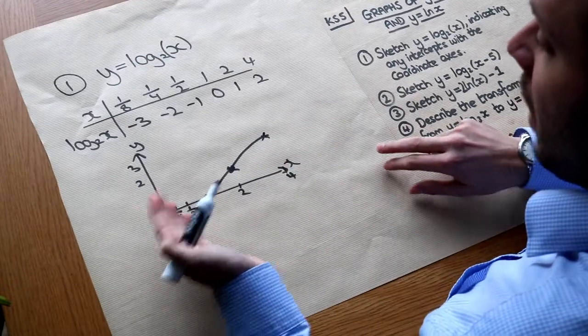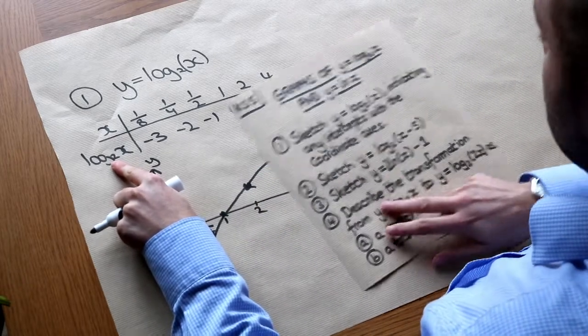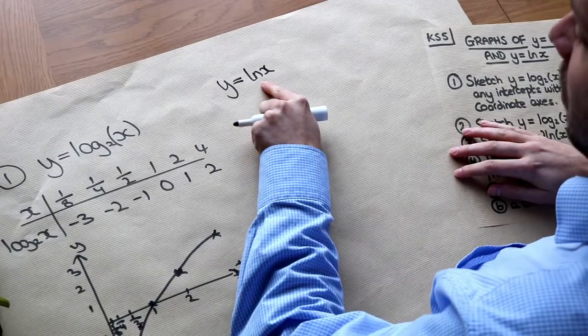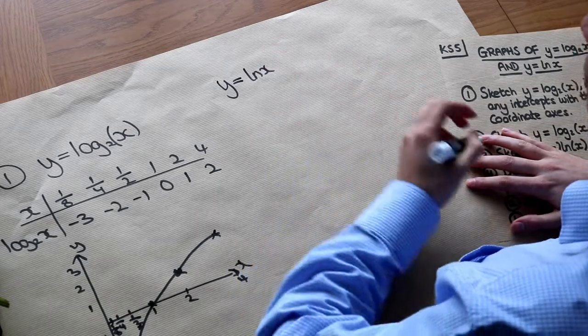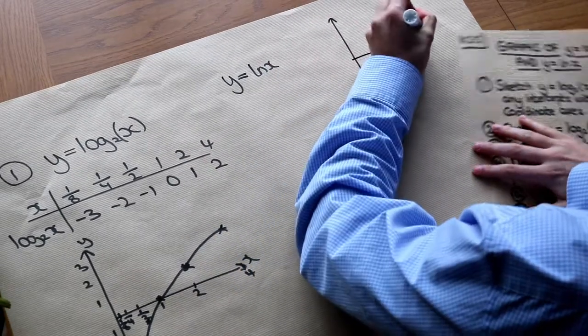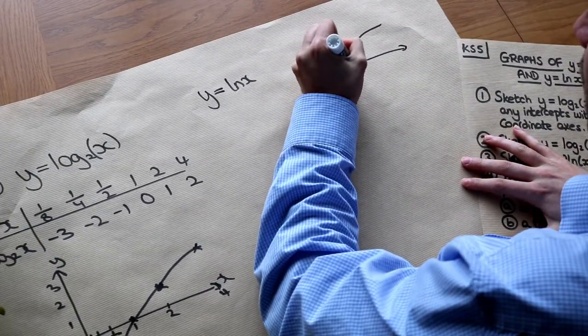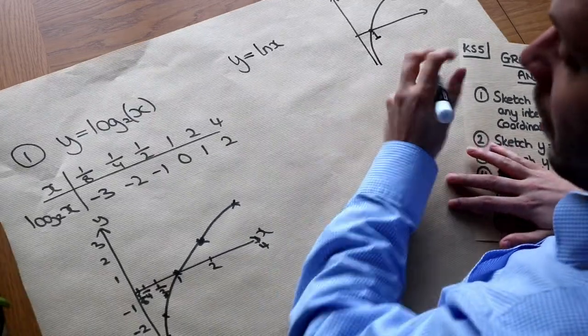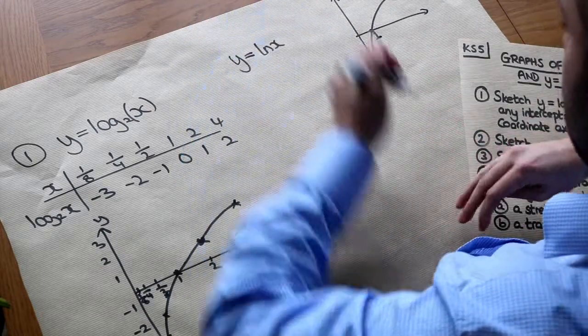And I know that the overall shape will be the same regardless of what that base is. So if I wanted to sketch say y equals ln of x, remember that just means log base e of x, if you haven't encountered that before, and e is just a constant so it's just any old base. And that's going to have the same shape, so it's going to still look like this. And the important thing is that the root, the x-intercept, is going to be 1.